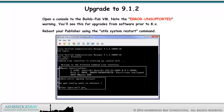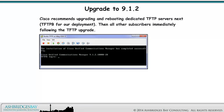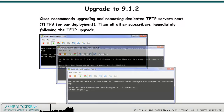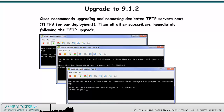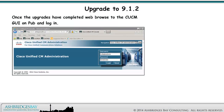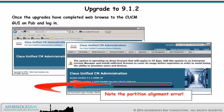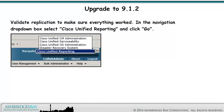Open a console to the BuildsPub VM. Note the Error Unsupported warning — you'll see this for upgrades from software prior to 8.x. Reboot your publisher using the utils system restart command. Cisco recommends upgrading and rebooting dedicated TFTP servers next — TFTP-B for our deployment — then all other subscribers immediately following the TFTP upgrade. Once the upgrades have completed, web browse to the CUCM GUI on Pub and log in. Note the partition alignment error — no production support for this server.